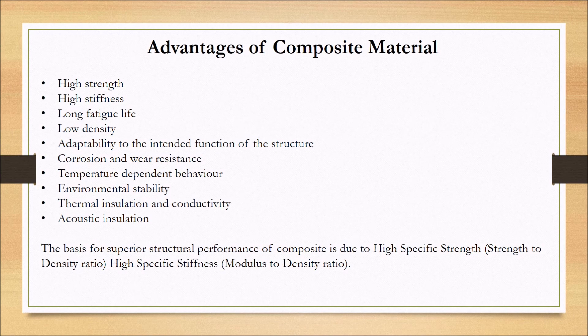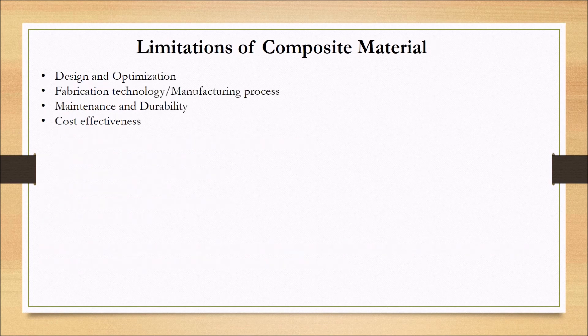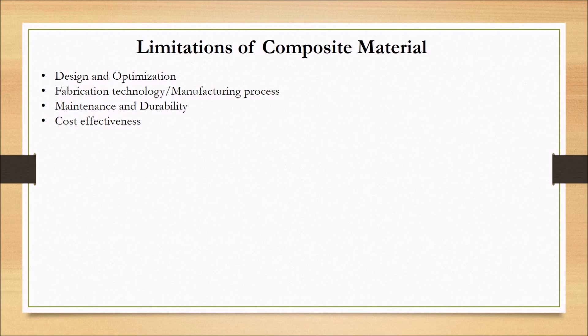The superior structural performance of composites is due to high specific strength (strength-to-density ratio) and high specific stiffness (modulus-to-density ratio). Due to these added advantages over other materials, composites are being used widely. Coming to limitations — composite materials are difficult to design to get the required properties and performance, optimization is a difficult process, fabrication is complex, and maintenance cost is also high.